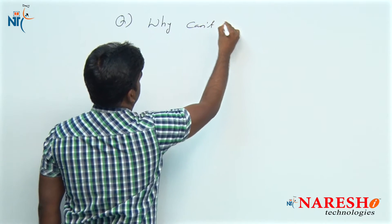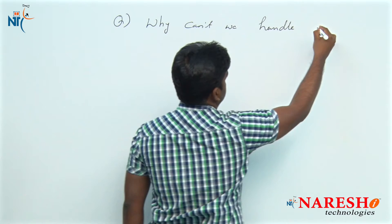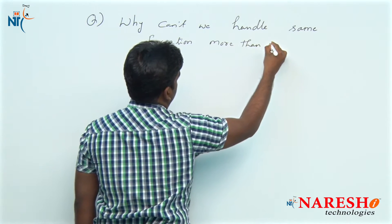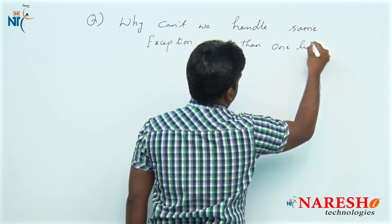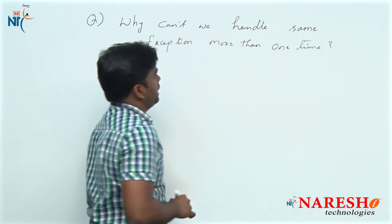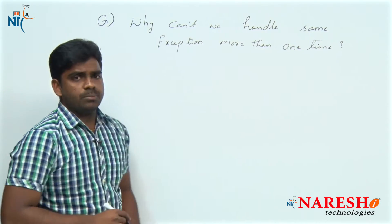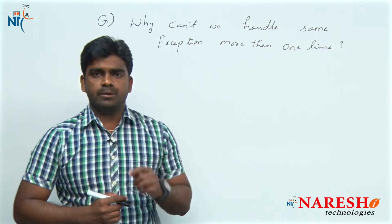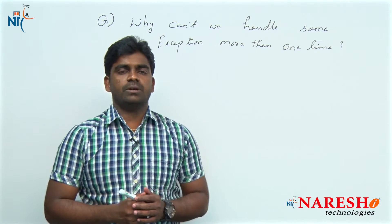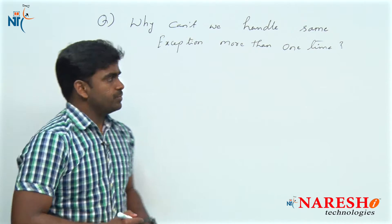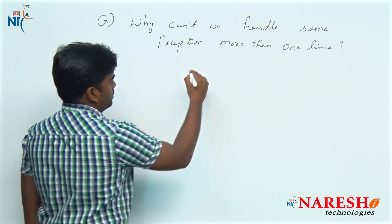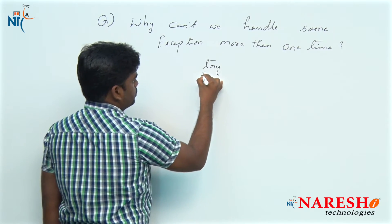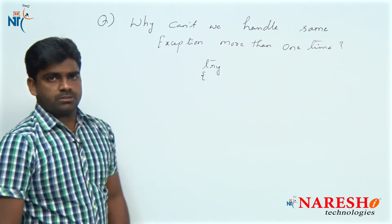Why cannot we handle the same exception more than one time using a single try block? One try block can have any number of catch blocks.